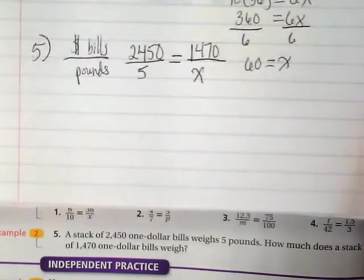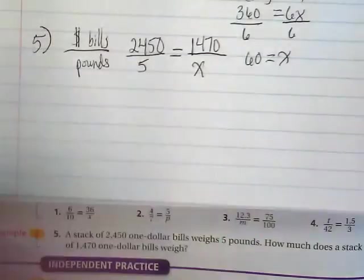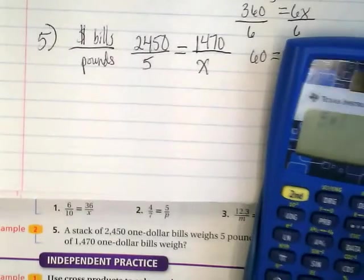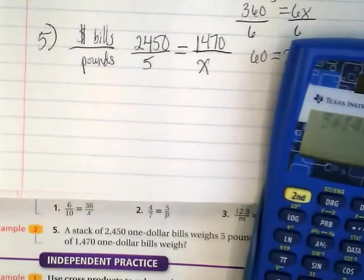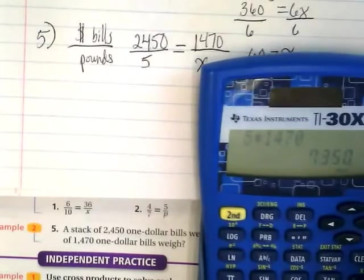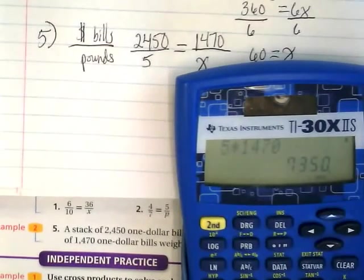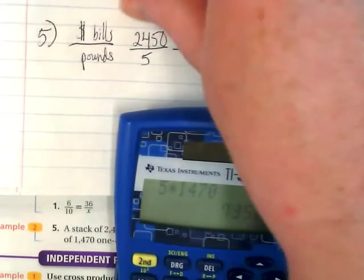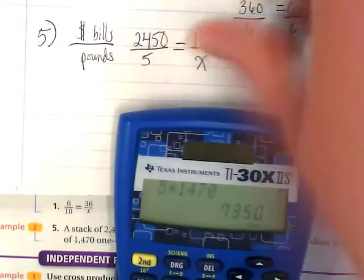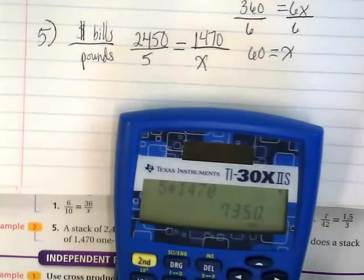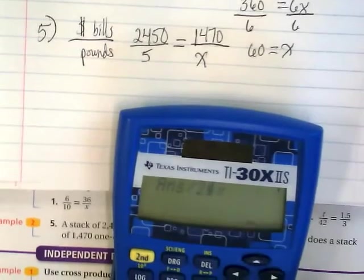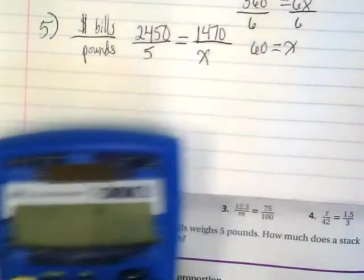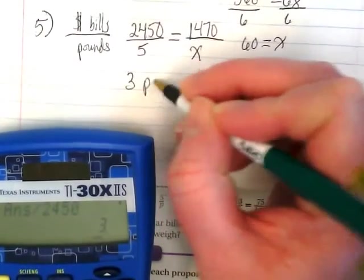Those are some pretty big numbers, so let's go ahead and cross multiply with our calculator. And we're going to cross multiply 5 times 1,470. And we get 7,350. And what are we going to divide by? 2,450. I always think of the number that's across from the variable as like the lonely one. That's the one you divide with. And we end up with 3. So the answer to this problem would be 3 pounds.